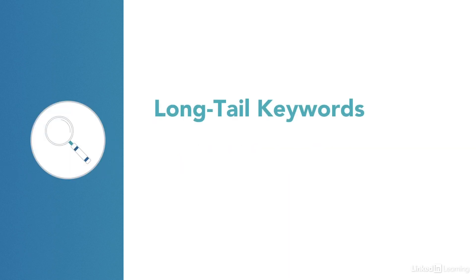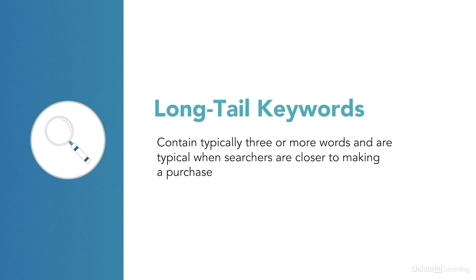The second type is long tail keywords. These are several keywords or keyword phrases — typically three or more words. Long tail keywords are targeted and more specific. This generally means that searchers have an intent when they search; they're more likely to know what they're looking for and are closer to making a purchase or a decision.